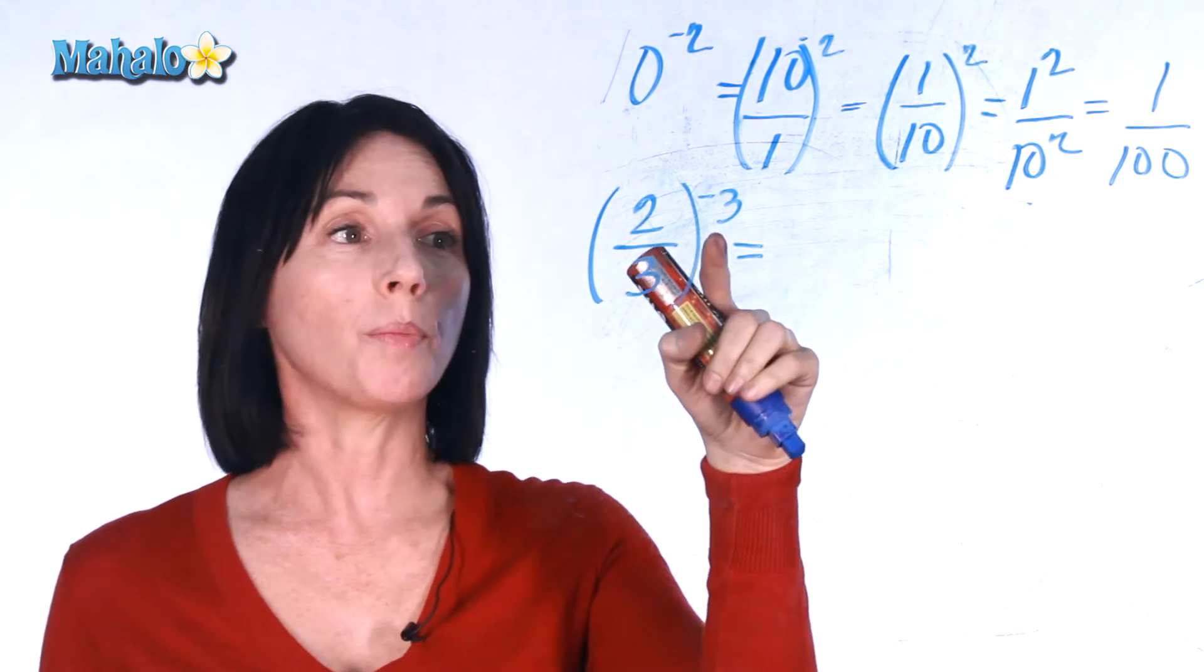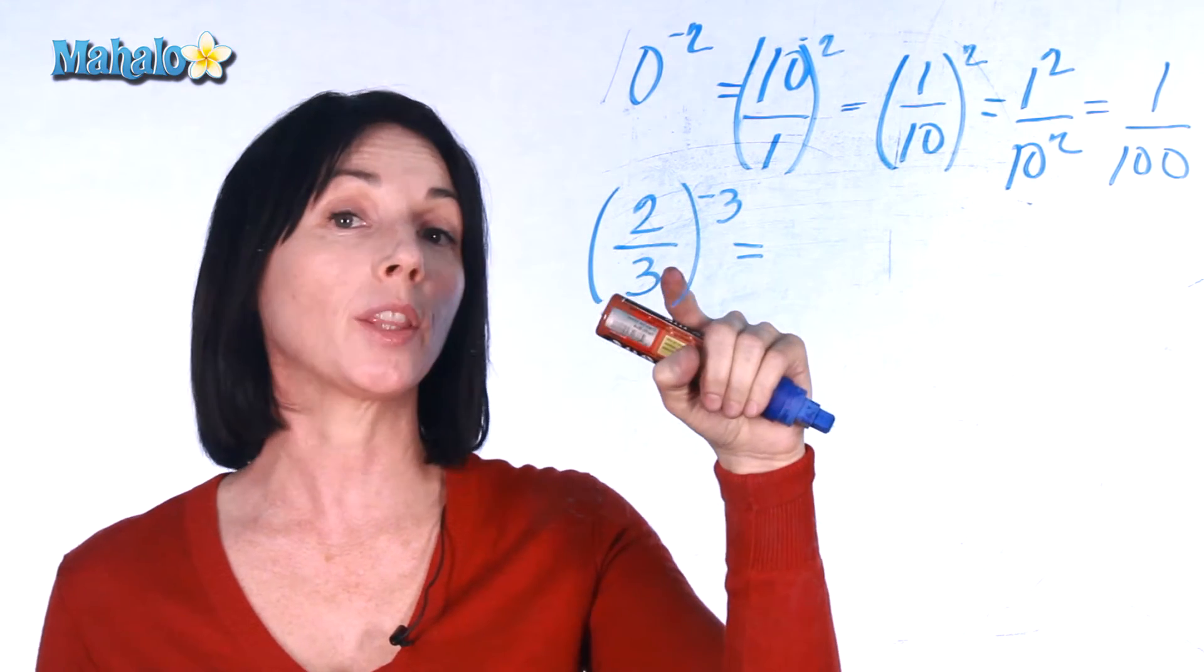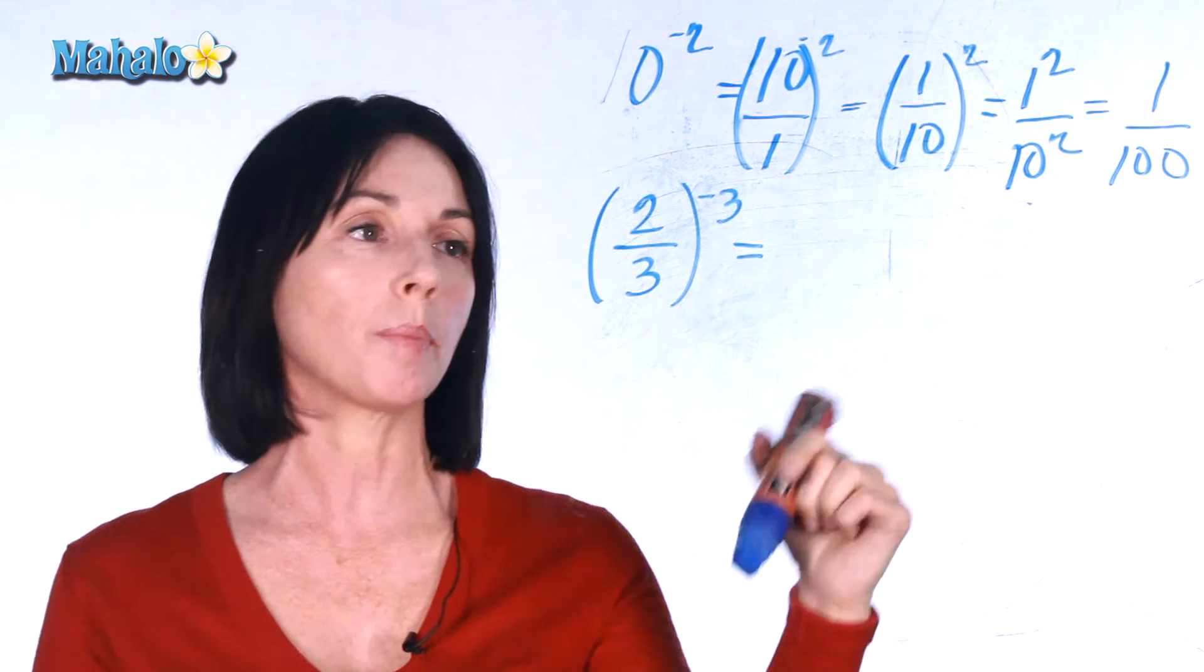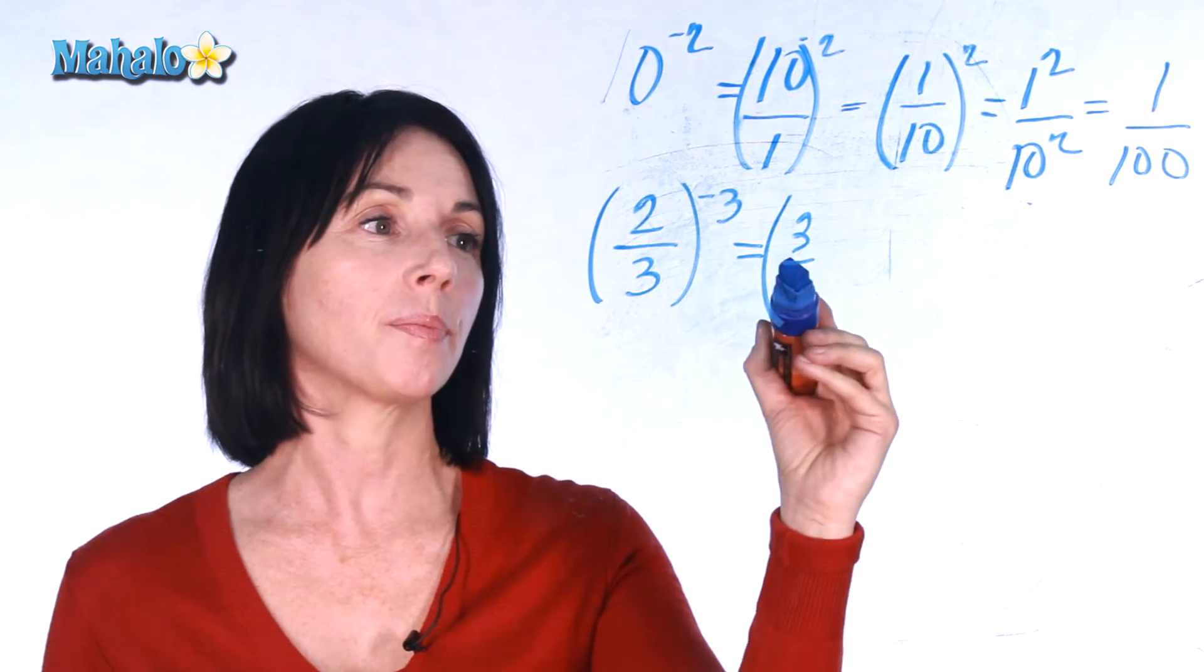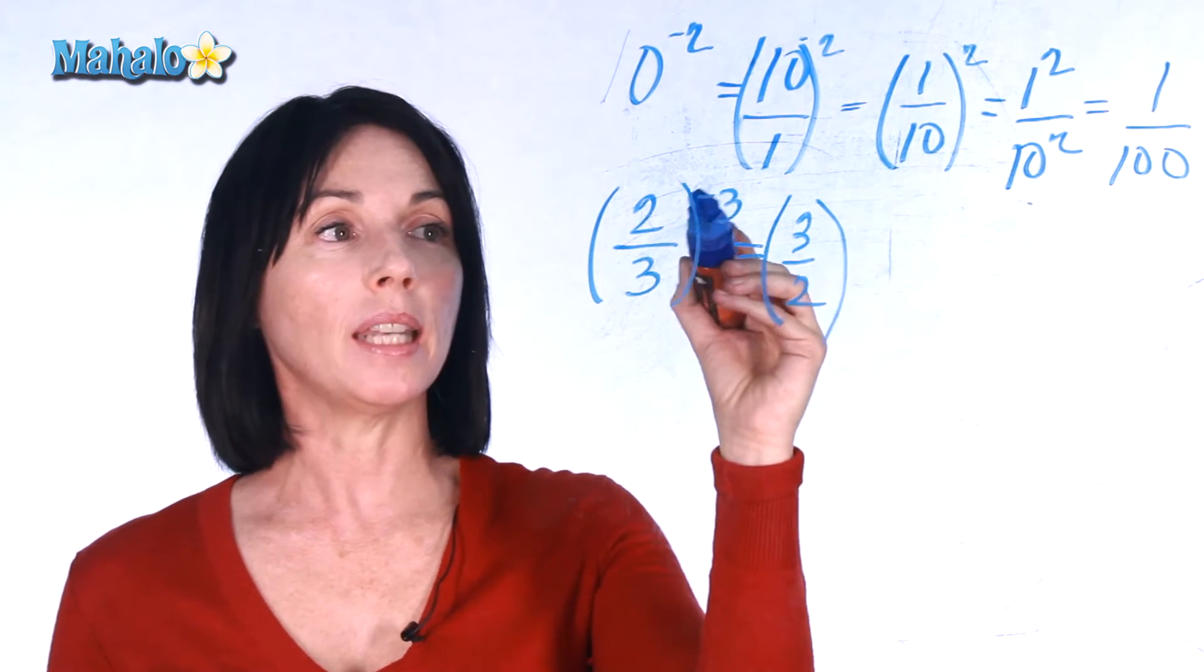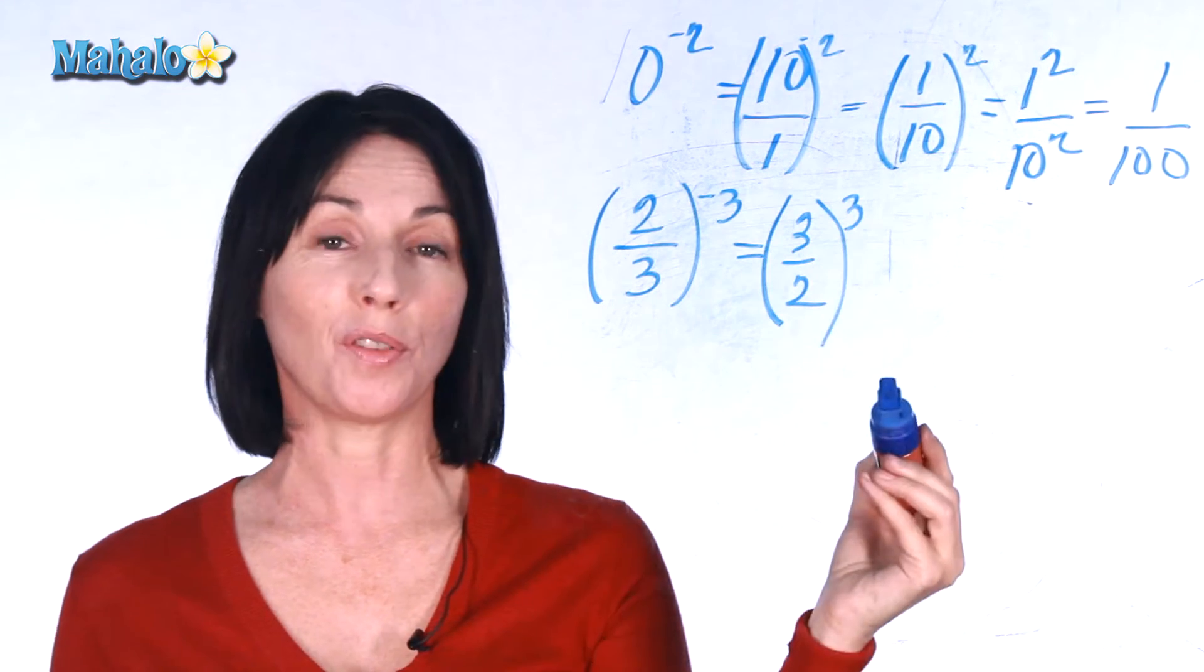To make our exponent positive we have to take the reciprocal of this, so just flip it upside down. So if we flip 2 thirds upside down we get 3 halves, and now instead of a negative 3 we have a positive 3 for our exponent.